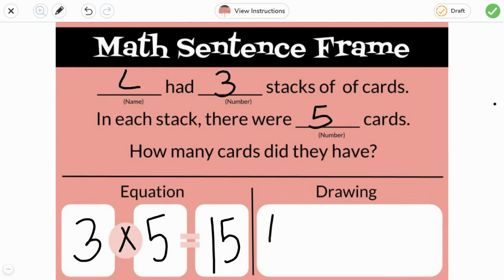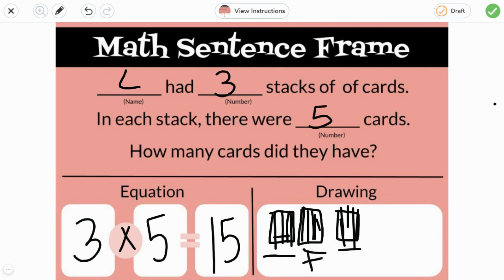So we have three stacks of cards. In each stack, there are five cards. One, two, three, four, five in each stack. So there are five cards per stack. When we count and add them all together, it also gives us 15. But the easy method is to multiply.